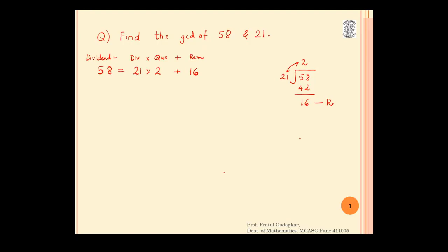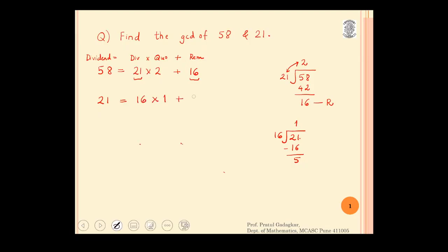Now I will take the divisor and the remainder and divide them again — divisor is divided by remainder. From this step I will get: dividend 21 is equal to divisor 16 into quotient 1 plus remainder 5.